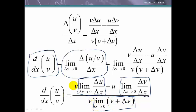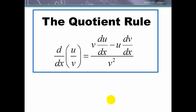So here we have v du dx minus u dv dx all over v squared when we compute the limit. And that is our quotient rule.